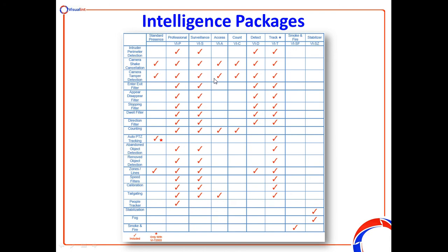Camera tampering is also quite a useful feature. Imagine someone grabs a scaffold pole and bashes the camera to push it out of the way so it's not looking where it needs to be looking. Because the scene has changed drastically, that can generate a tamper alert, which might send an email to someone or a security guard, or pop the camera up on a screen to let them know the camera has been tampered with. That's obviously pretty serious and action can be taken.